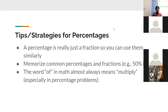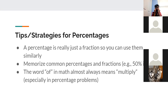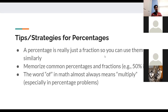Now for some quick tips on percentages. Percentages are just fractions: 50% is one half. You should memorize common fraction-percentage conversions, such as 3/4 = 75%, 1/3 ≈ 33.33%, 2/5 = 40%. Also, the word 'of' in math almost always means multiply — so '10% of 100' means multiply 10% and 100 together.